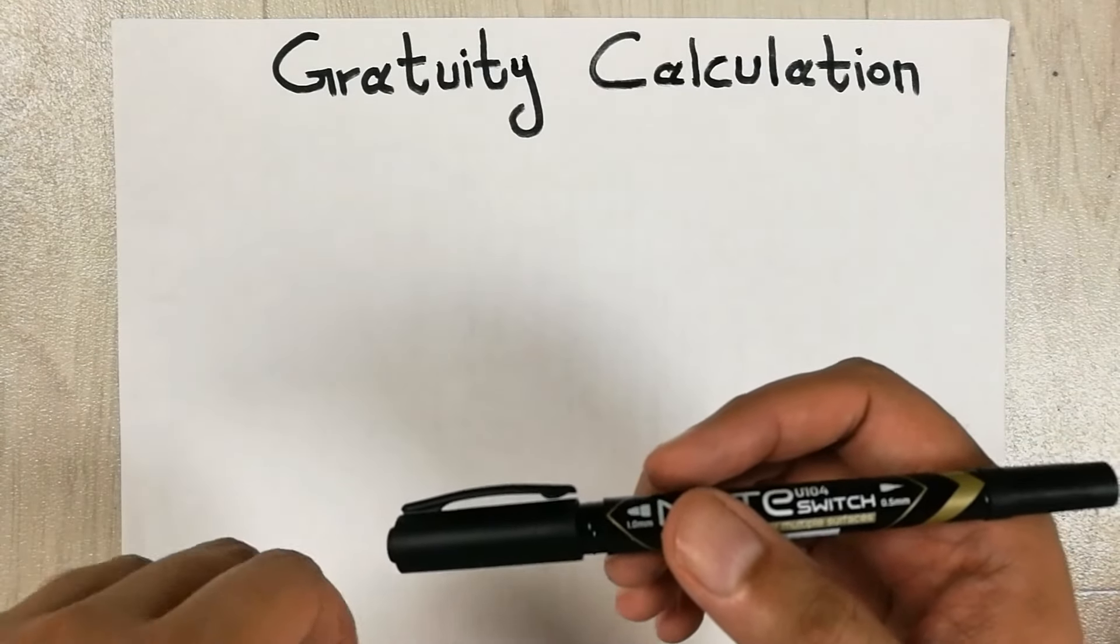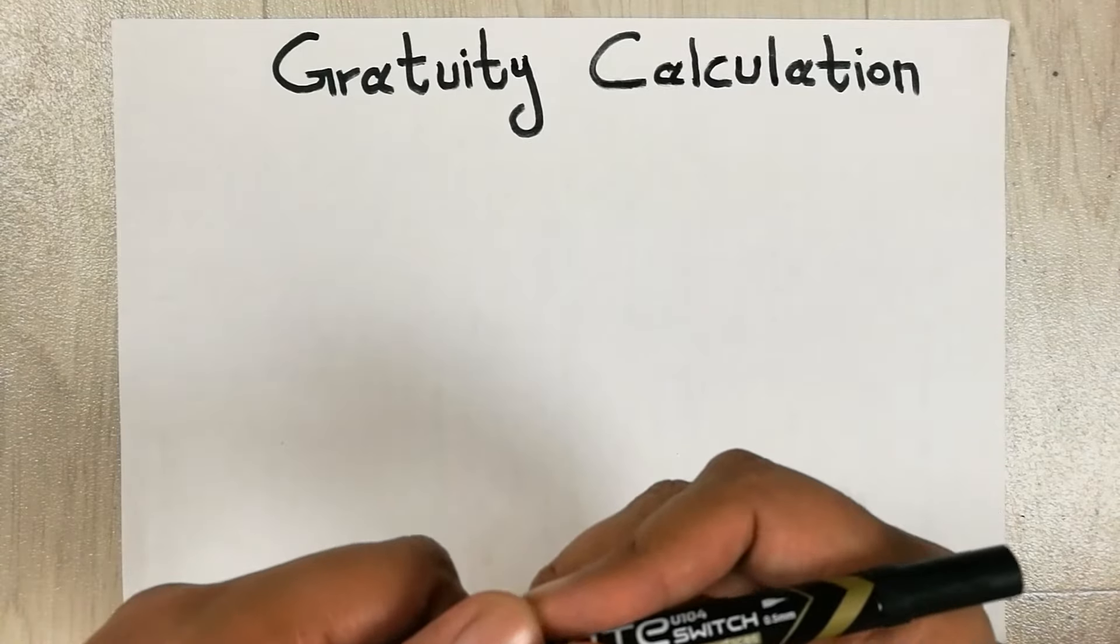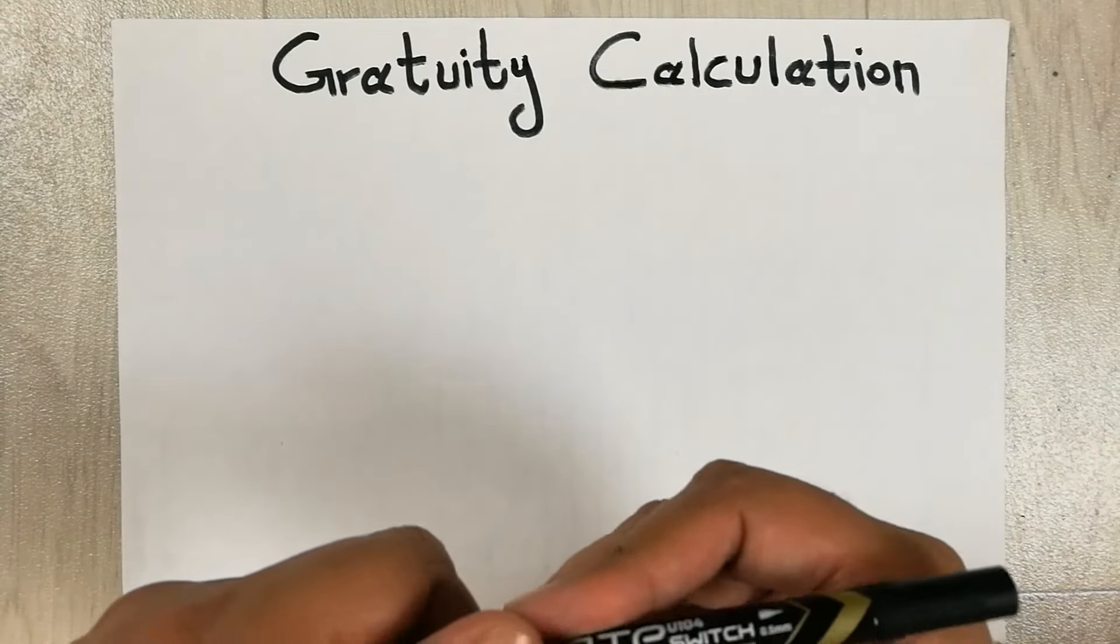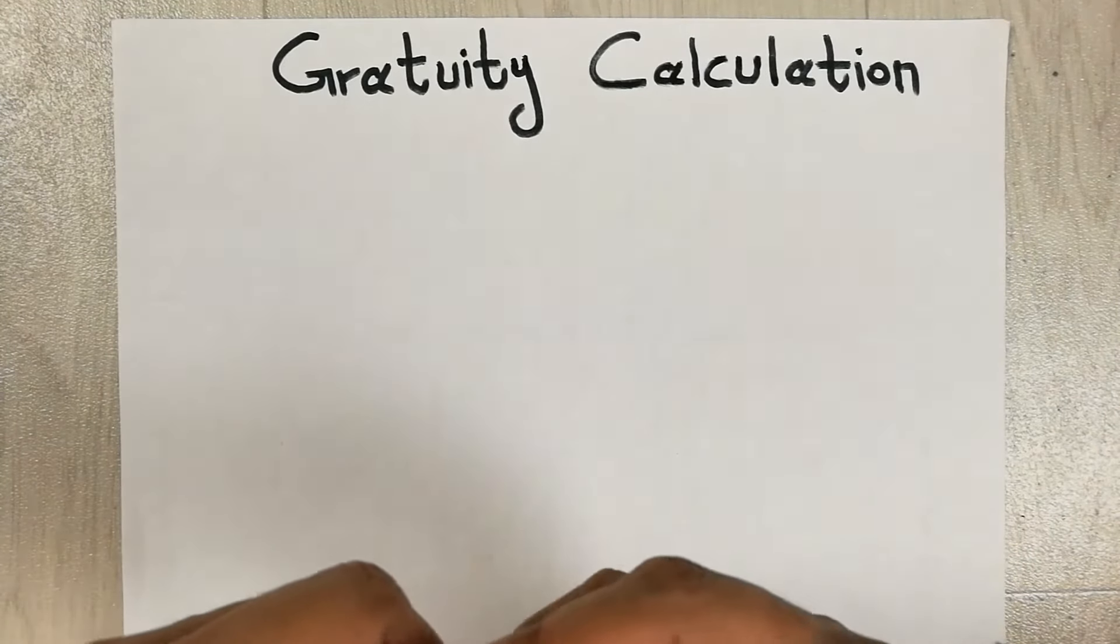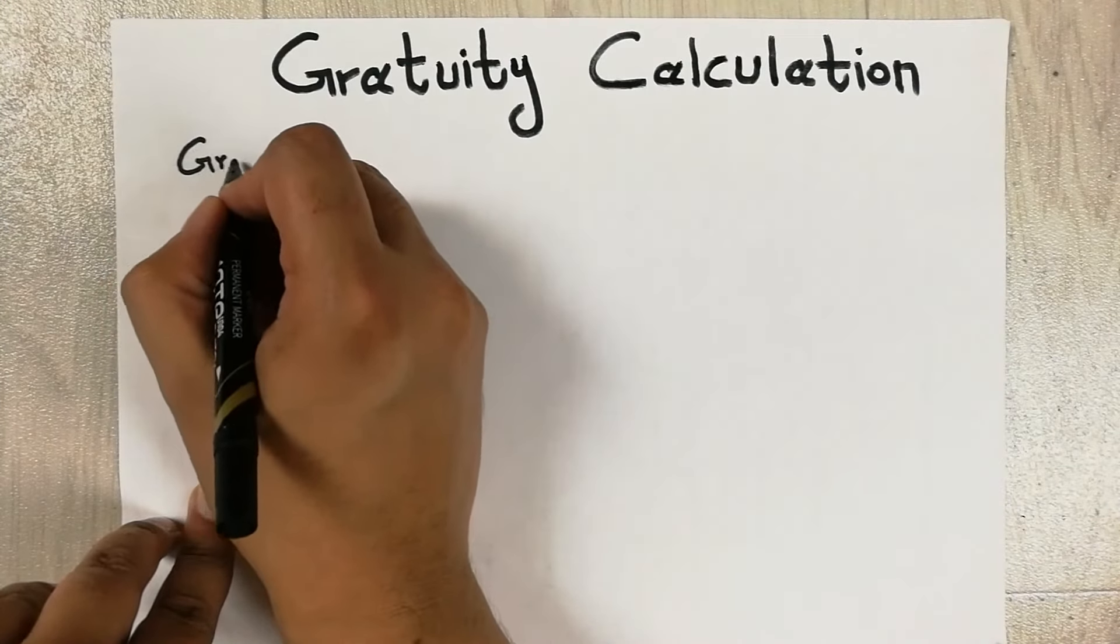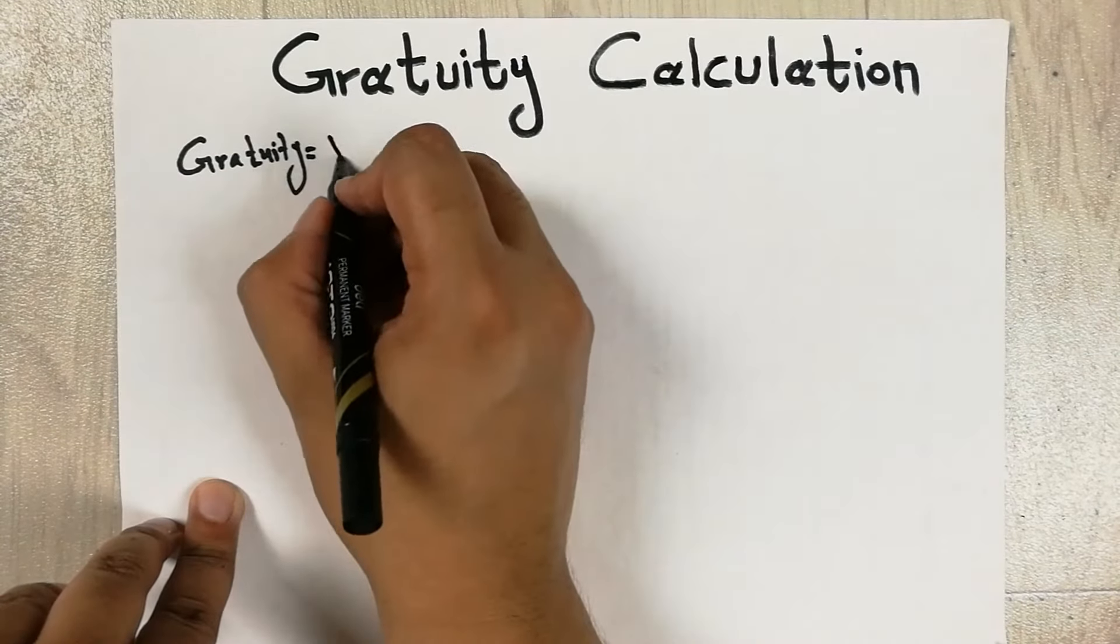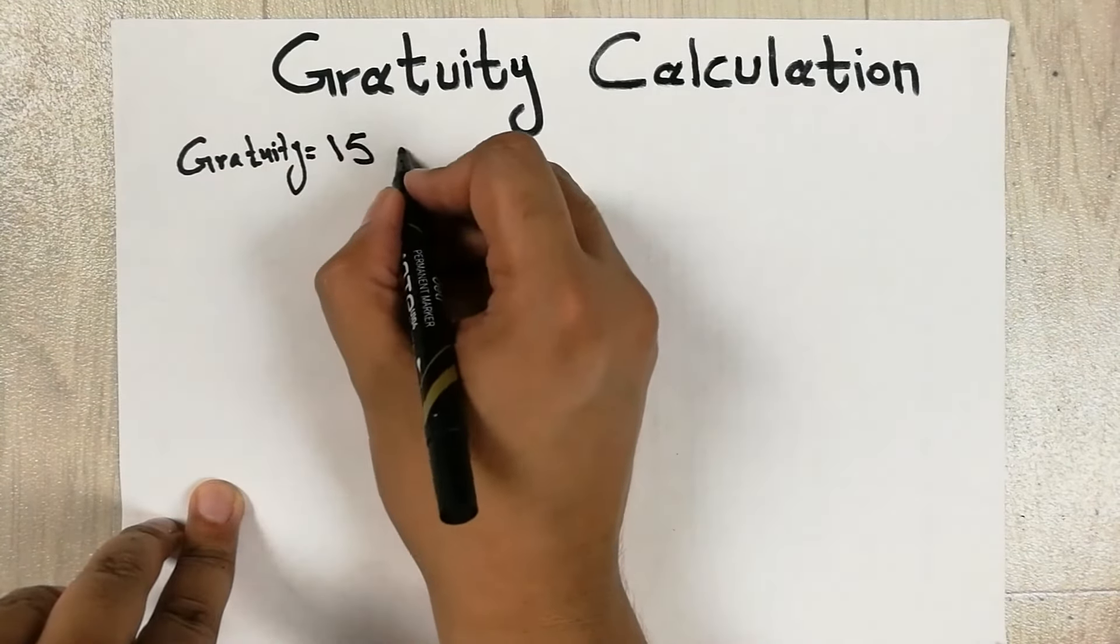Hello guys, I hope you are doing really well. In today's video I will show you how to calculate gratuity. So first I will write down the formula for gratuity calculation. Gratuity is equal to 15 multiply by last drawn salary.